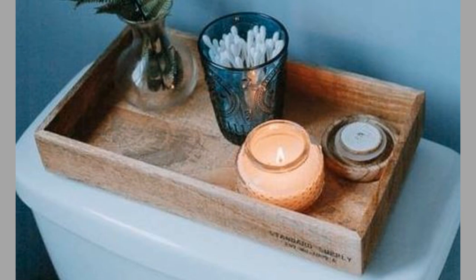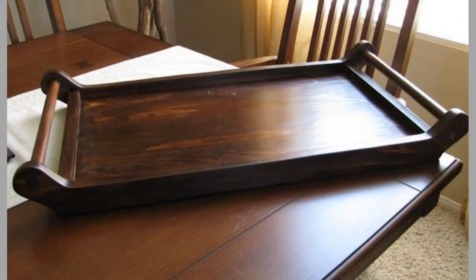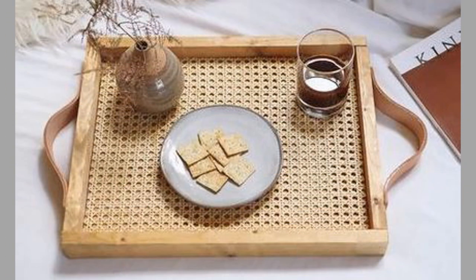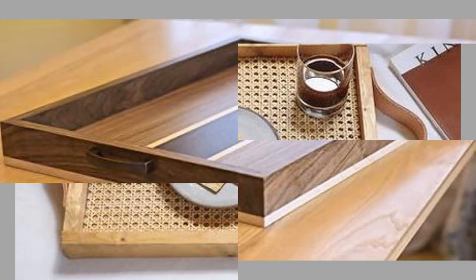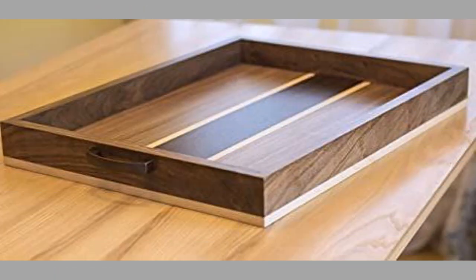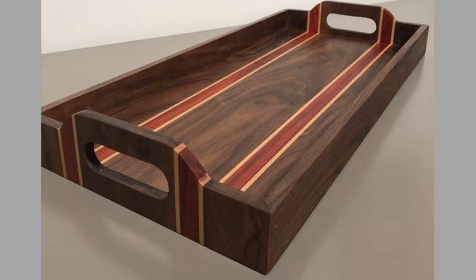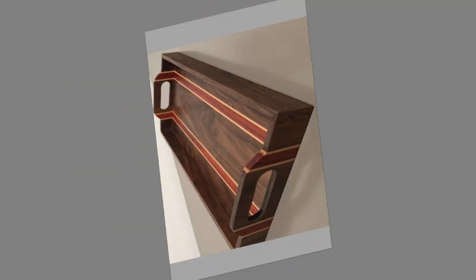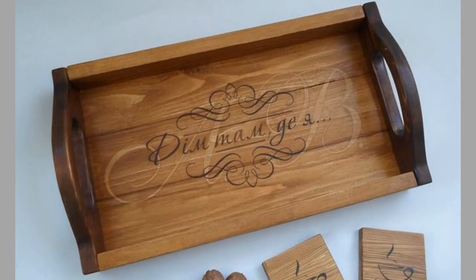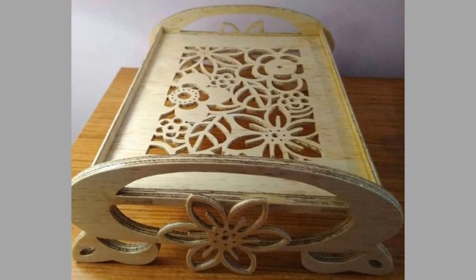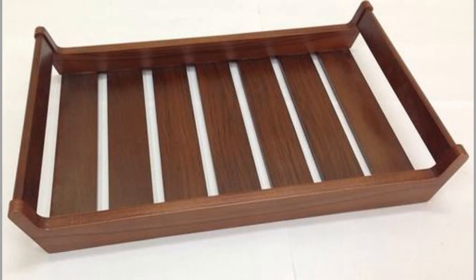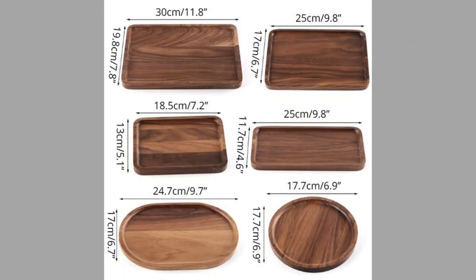The serving tray as we know it today is an evolution of the salver, a term used in England from the mid-17th century to denote a flat tray usually made of silver. The word derives from the Latin 'salvari', meaning to save. Originally, the use of a salver indicated that the food or drink served upon it was intended for royalty, because a servant was required to test everything for poison before it reached the king's table. The salver indicated this process had taken place and that the food or drink was now fit for a king.